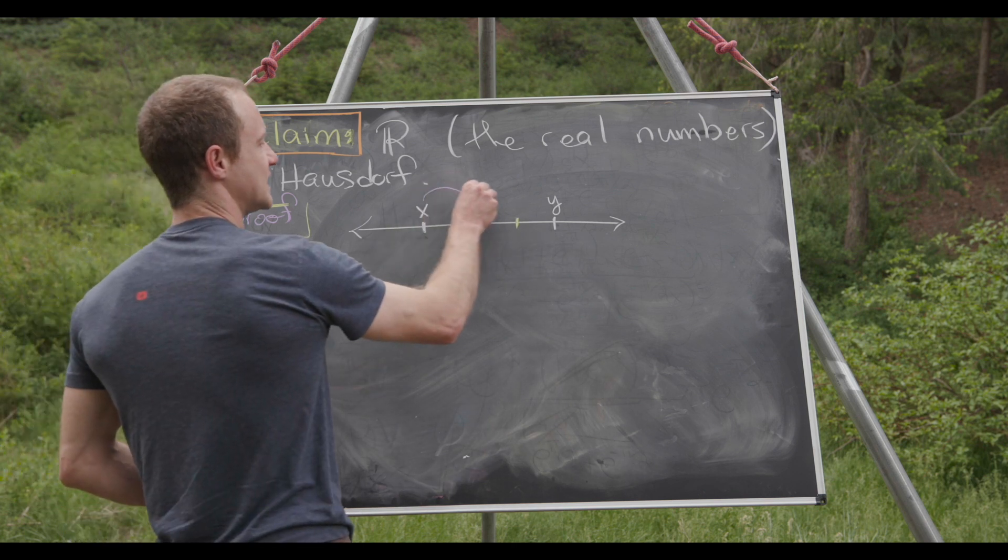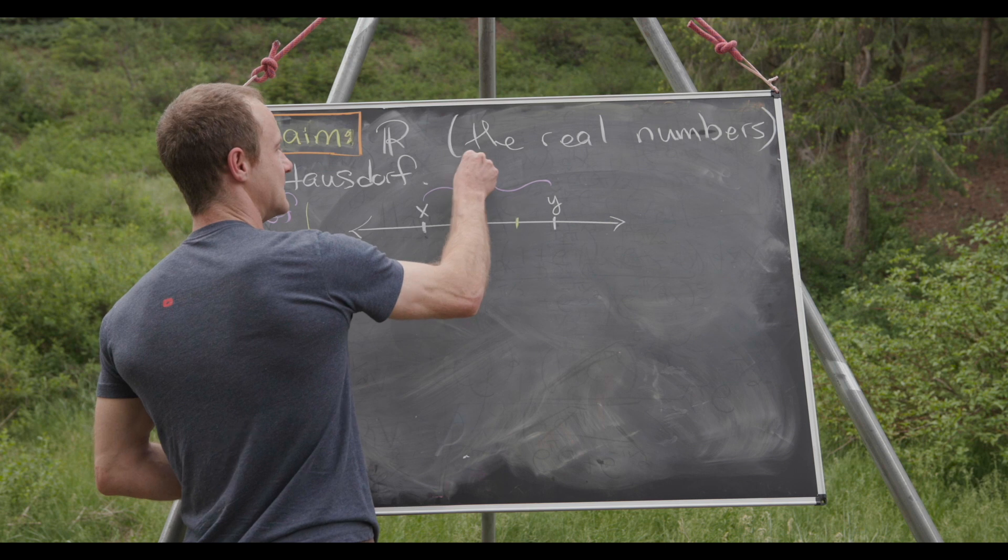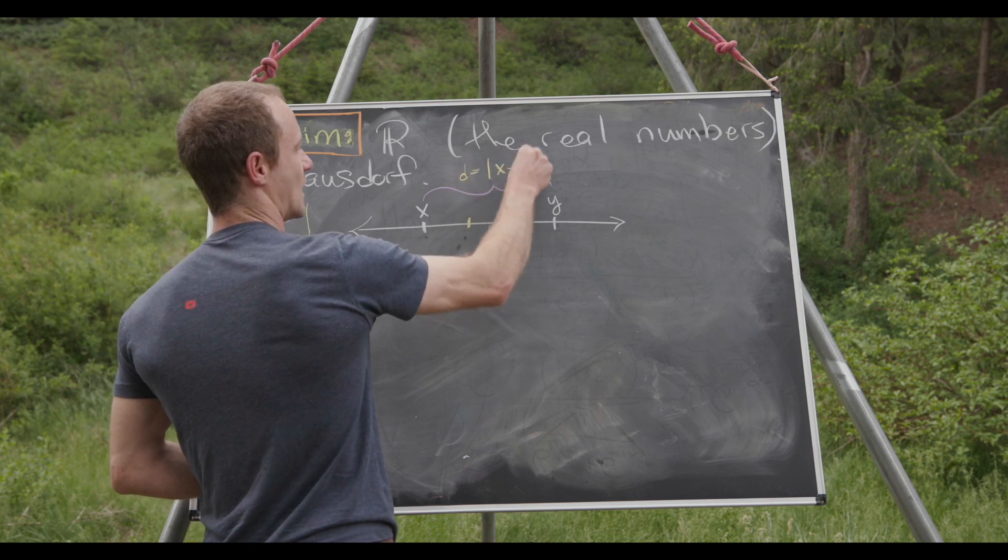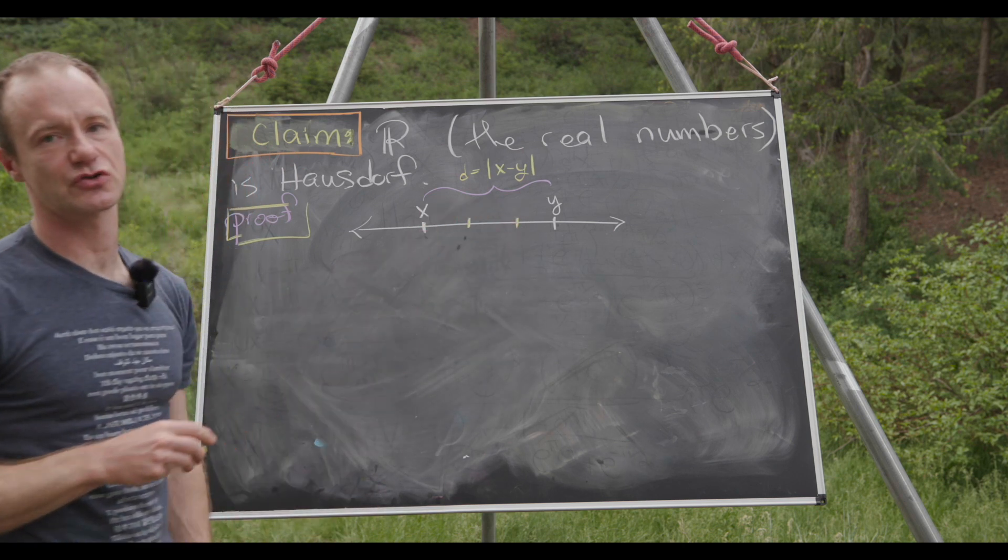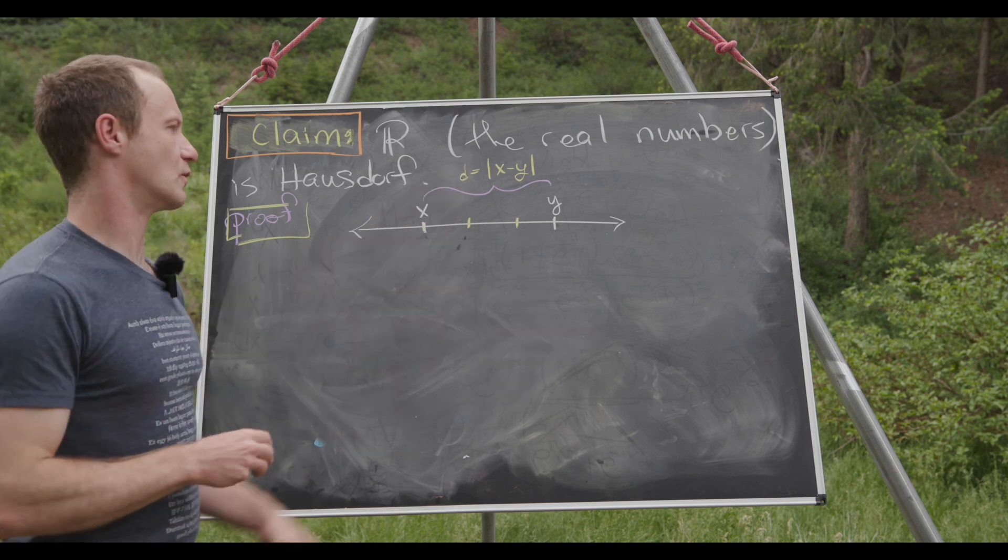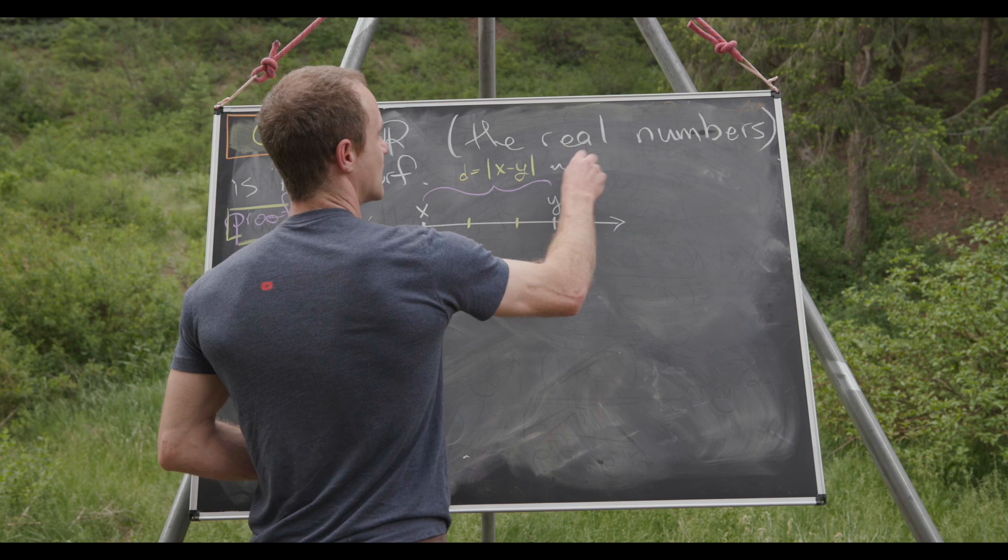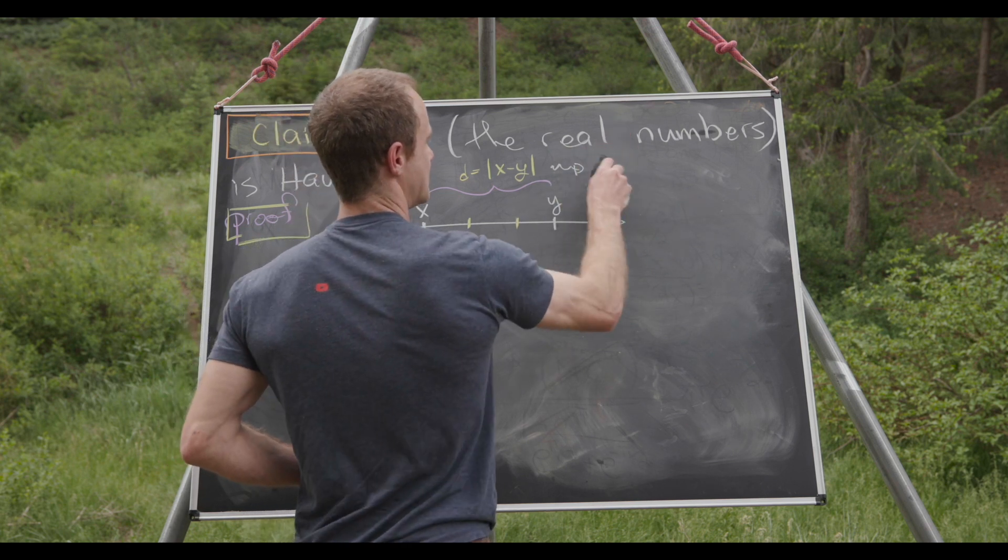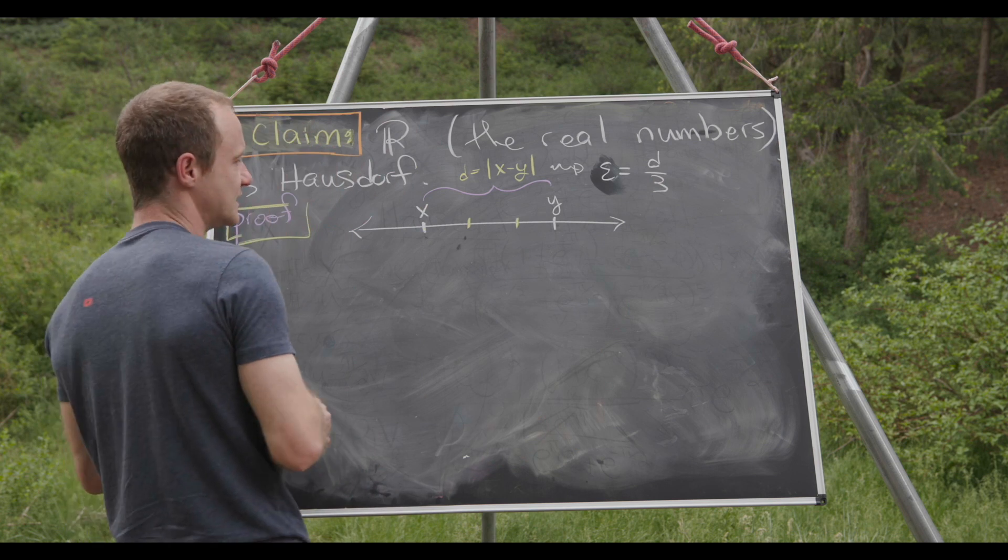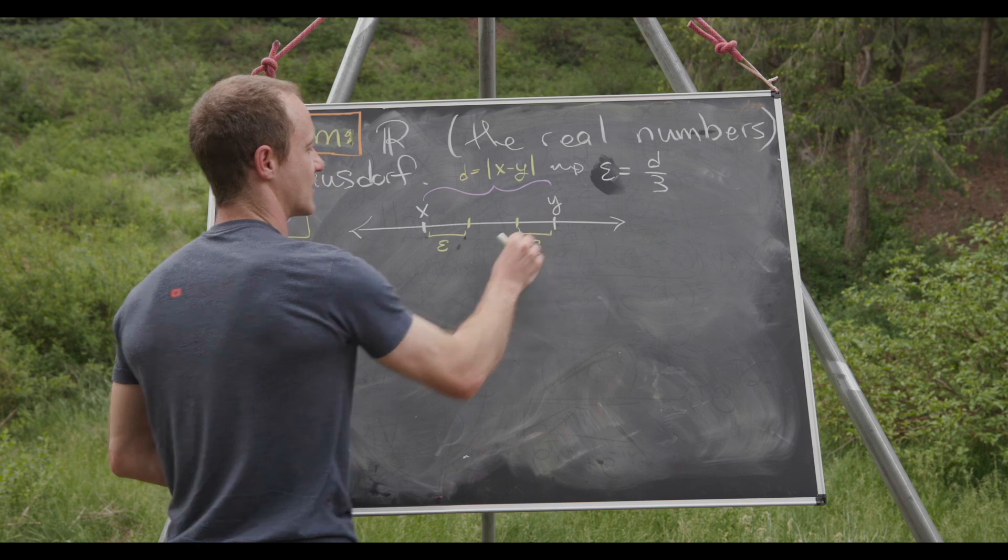So in particular we'll call this distance d, and that distance will be the absolute value of x minus y. Now in this case I could have just written y minus x because we've written y to the right of x, but to keep it general we'll do this. And then from here let's set epsilon equal to d over 3. So that means this distance right here is epsilon and this distance right here is epsilon. And from this we can pretty easily construct those open intervals.